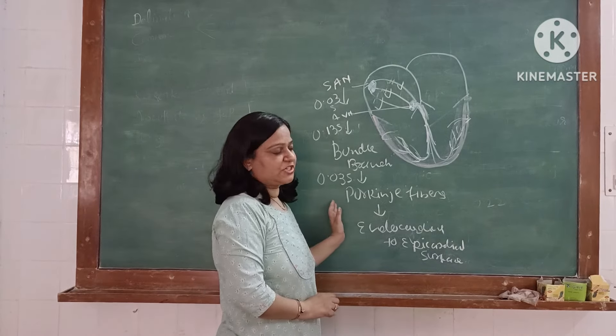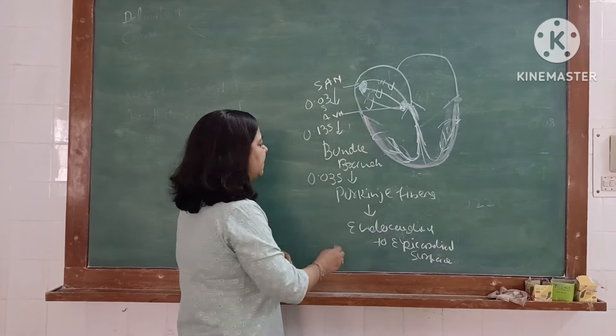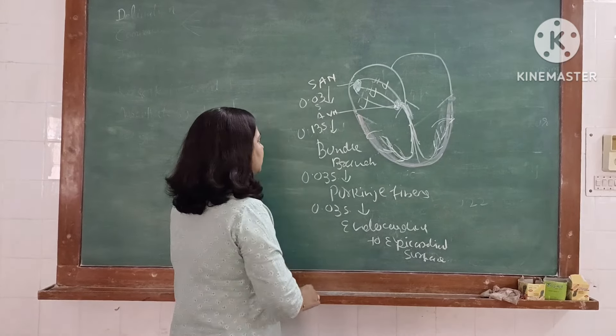Through Purkinje fibers, impulse switches from endocardial to epicardial surface and time taken for this is 0.03 second.